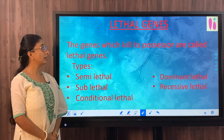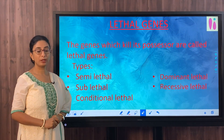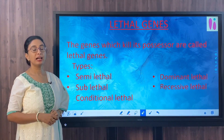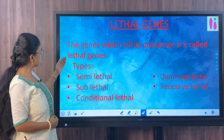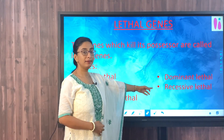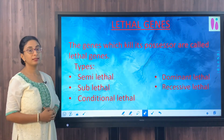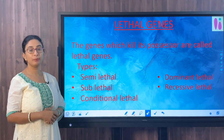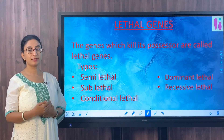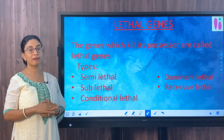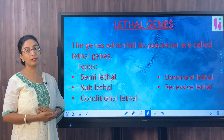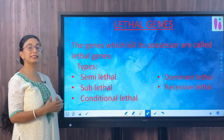Lethal genes, as the word suggests, are the genes which kill their possessor. Under lethal genes we have various types: semi-lethal, sublethal, conditional lethal, dominant lethal, and recessive lethal. Semi-lethal genes kill their possessor after the attainment of adolescence — the person has the genes from birth but lives a normal life up to around age 40, after which these genes express and then kill them. Sublethal genes kill their possessor even before the attainment of adolescent age; kids with these genes do not even grow up to adolescence.